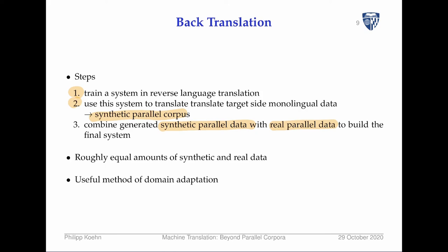In practice, you should have roughly equal amounts of synthetic and real data, though experiments show you can get away with a bit more synthetic parallel data than real data. This is also a pretty good method for domain adaptation: if you have target-side data in a domain but not much parallel data, this method generates parallel data that at least on the target side perfectly matches the domain.